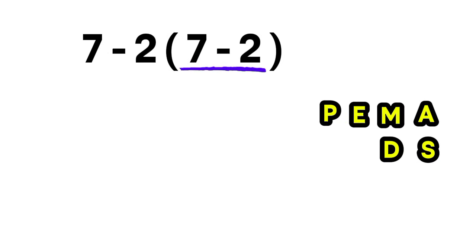Inside the parenthesis, 7 minus 2 equals 5. Now the expression becomes 7 minus 2 times 5. At this point, we have one multiplication and one subtraction. Multiplication comes first. So 2 times 5 equals 10.